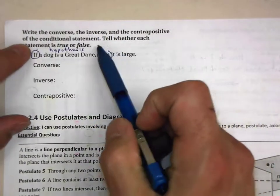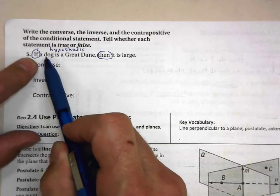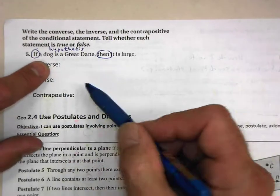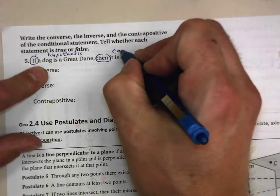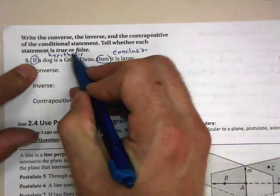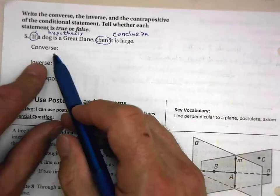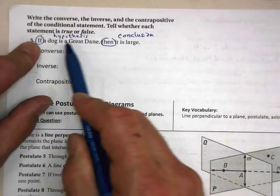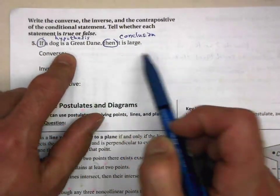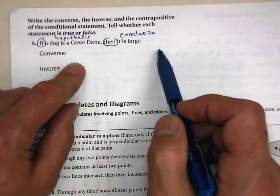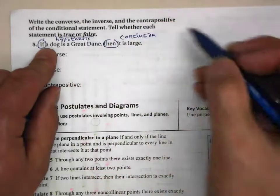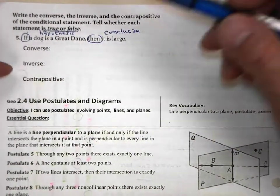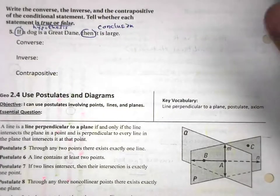Flip over the page of your notes and write the converse. Your conditional statement is: 'if a dog is a Great Dane, then it is large.' Write the converse: 'if a dog is large, then...' — what would be the remaining part? Also tell me whether that converse is true or false. Then write the inverse and the contrapositive, and tell me whether each is true or false. Hope that's helpful. We'll see you soon in class.